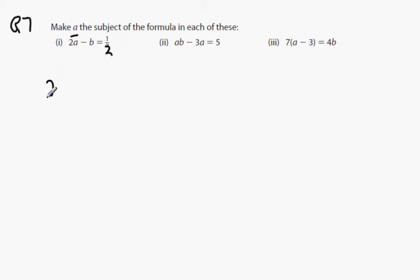The first way of doing it is to say 2A equals a half plus B. Then you could say divide both sides by 2 and you could say A equals a quarter plus B over 2. So that's one answer.